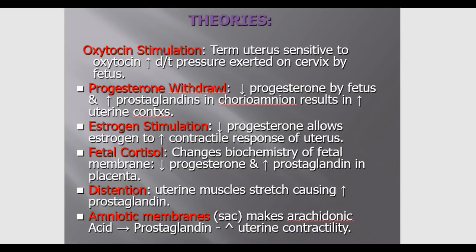I prefer alternate terminology because students understand the content better. The oxytocin theory, also known as the oxytocin stimulation theory, explains that as pregnancy comes closer to term, the uterus becomes more sensitive to oxytocin. As pregnancy progresses, the baby drops further into mom's pelvis, putting pressure on the cervix, which sends a message to her brain to release oxytocin — and oxytocin causes the uterus to contract.